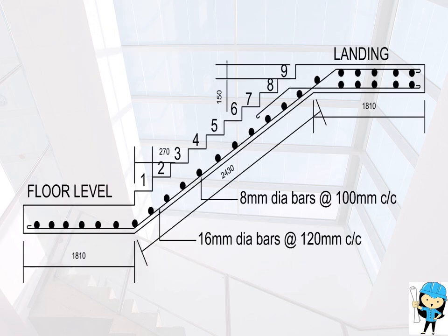This is the reinforcement detailing of the staircase we have designed. Main reinforcement is provided as 16 mm dia bars at 120 mm spacing, and distribution reinforcement is provided as 8 mm dia bars at 100 mm center-to-center spacing.